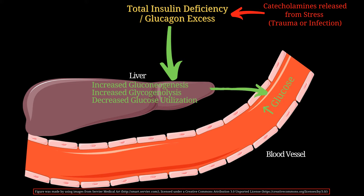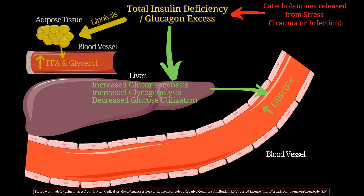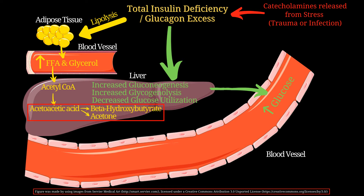All of these effects aim to raise total blood glucose levels. In adipose tissue, glucagon functions to break down fat into free fatty acids. Free fatty acids are then transported to the liver, where they are converted into acetyl-CoA. Acetyl-CoA is then converted into acetoacetic acid, which further gets metabolized into beta-hydroxybutyrate and acetone — these three are known as ketone bodies and are responsible for many of the symptoms seen in diabetic ketoacidosis.